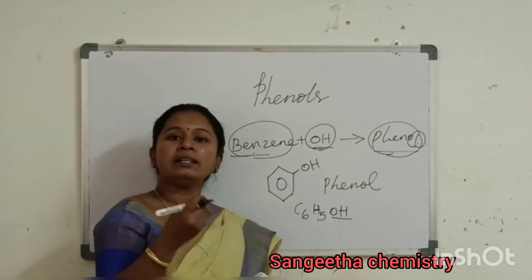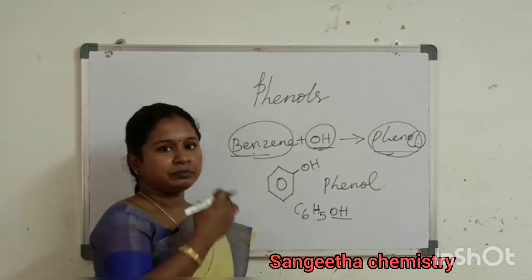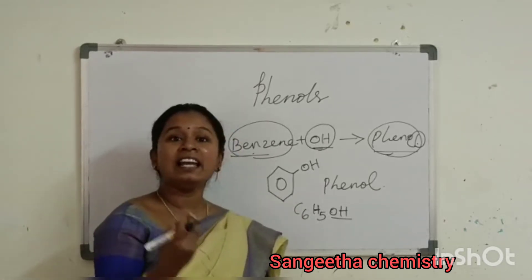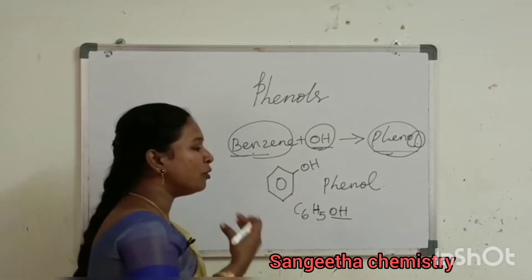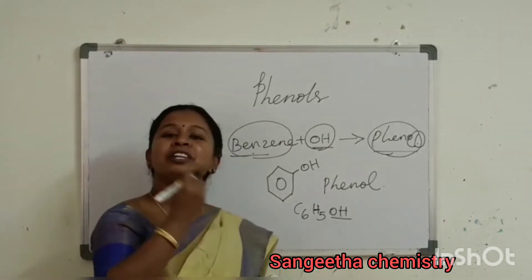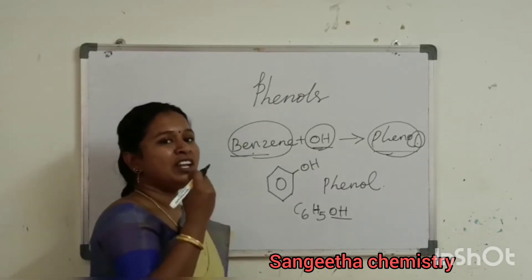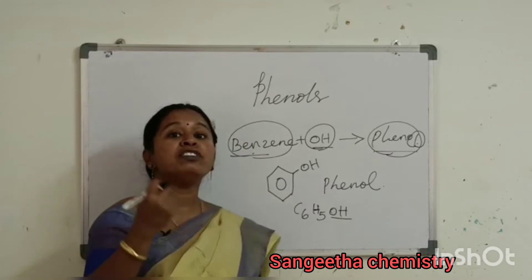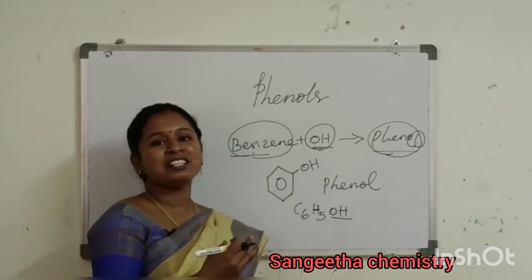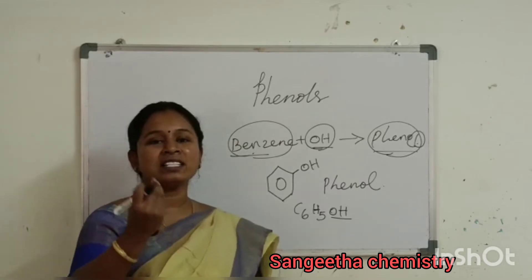What is the definition of phenol? A phenol can be defined as a compound containing a hydroxyl group which is directly attached to the aromatic ring — that is benzene — which is called phenol.